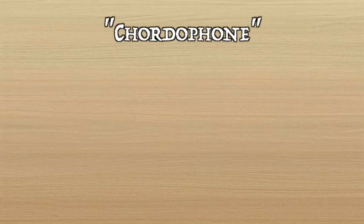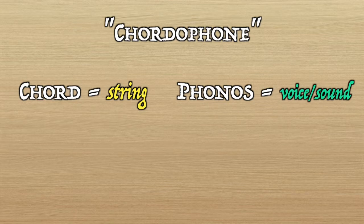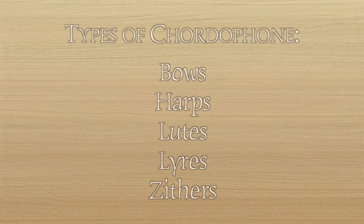A chordophone, which comes from the Greek 'chord' meaning string and 'phonos' meaning voice or sound, is defined by Encyclopedia Britannica as any of a class of musical instruments in which a stretched, vibrating string produces the initial sound. The five basic types are bows, harps, lutes, lyres and zivers. Those five basic types are very general and huge variation exists within each of them.